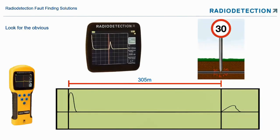The other point when looking for faults is to look for the obvious. So if we have a fault 305 meters down the line and around 305 meters we've seen that somebody has installed a new signpost, we can pretty much make a good guess that we need to look around there to find our fault.